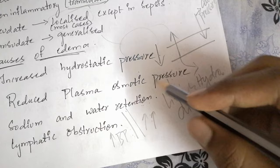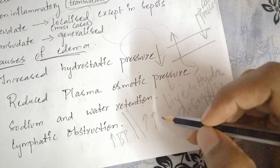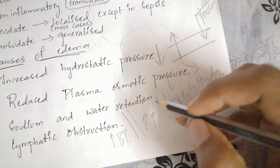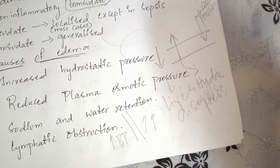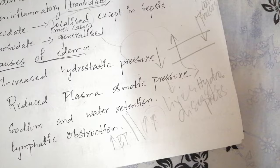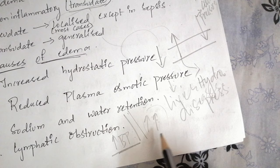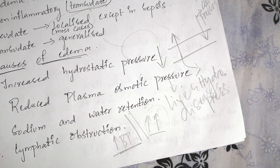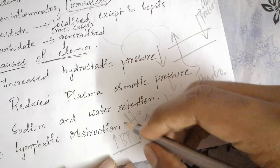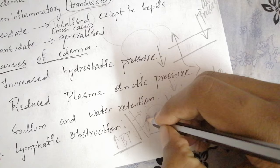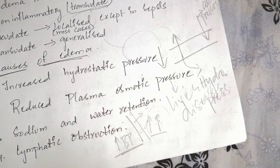Moreover, the renin-angiotensin mechanism increases retention of water and sodium, which increases blood volume. For some time this seems normal, but as blood volume increases along with increased blood pressure, fluid in the blood vessels tends to move out more. With decreased plasma osmotic pressure and increased hydrostatic pressure, the renin-angiotensin mechanism basically exacerbates edema and makes the situation much worse.